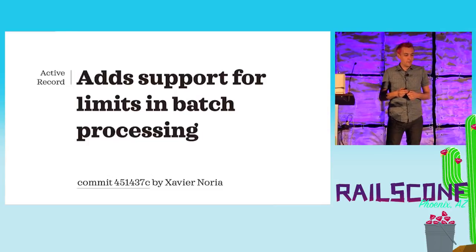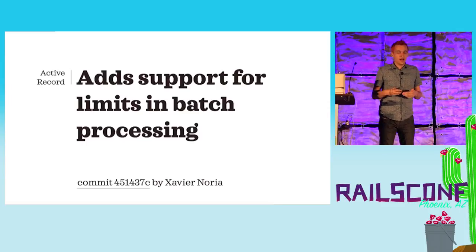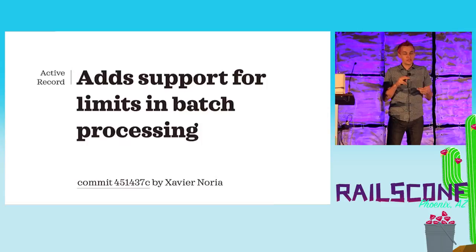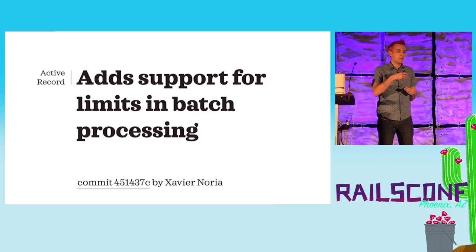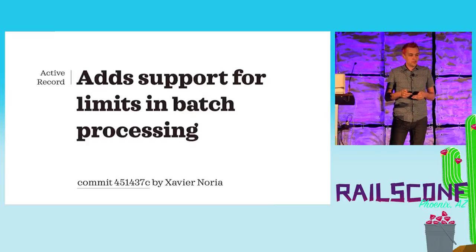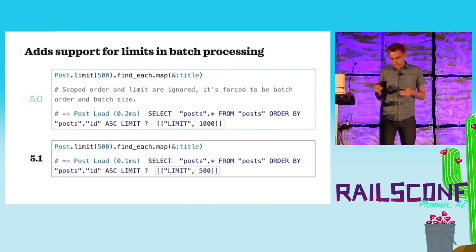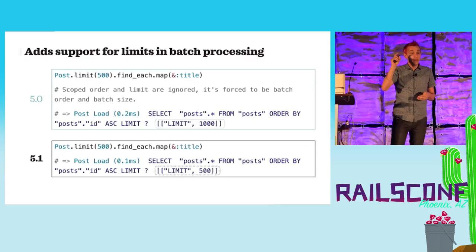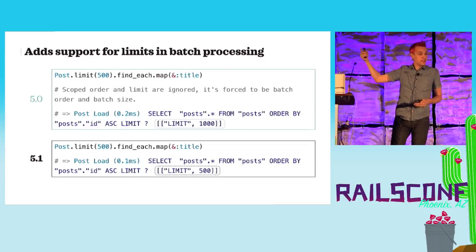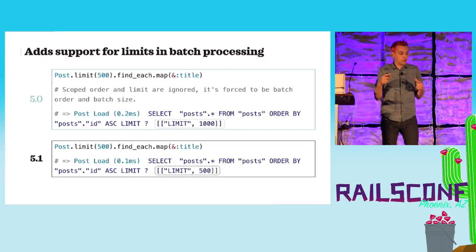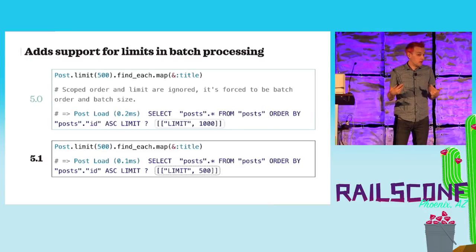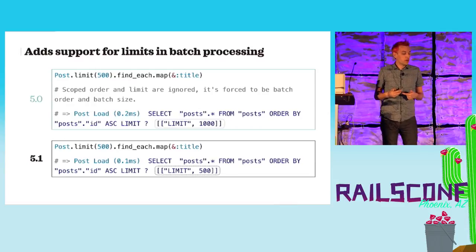If you have to deal with many thousands of records, ActiveRecord provides methods like find_each or in_batches. In 5.0, if you wanted to use the limit method with find_each, it wasn't really working — you would get a warning saying 'scoped order and limit are ignored' and the query would just fetch 1,000 because that's the default. In 5.1, the limit method is now supported.